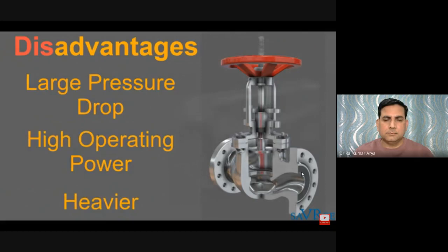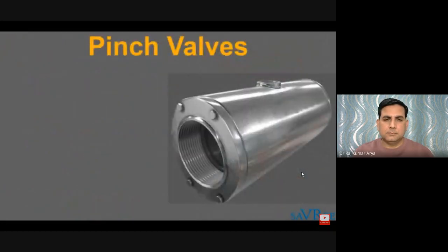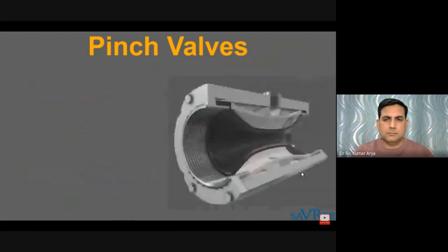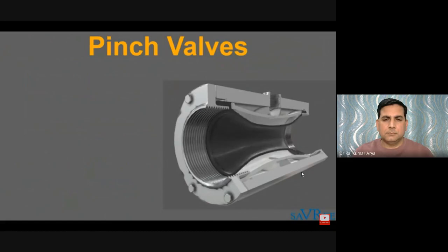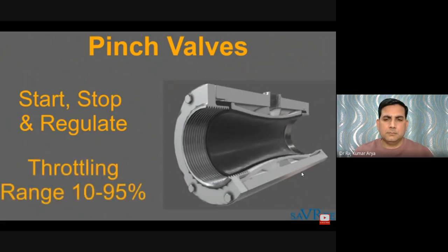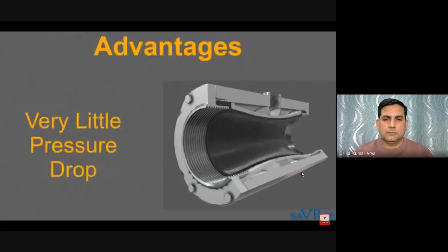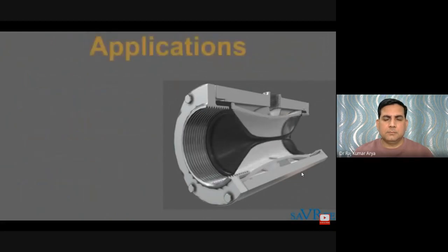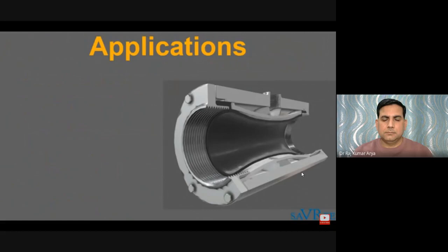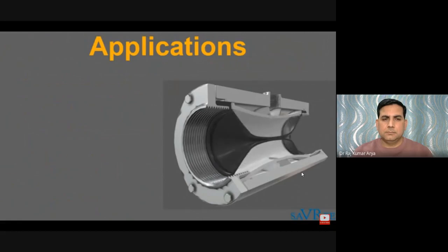Pinch valves are inexpensive and the simplest of any valve design. They consist of a sleeve moulded of rubber or other synthetic material and a pinching mechanism. Pinch valves can start, stop, or regulate flow, with effective throttling typically between 10% and 95% of rated flow capacity. There is almost no pressure drop across a pinch valve. They are ideally suited for handling slurries with large amounts of suspended solids due to their very large seating area, and since operating mechanisms are completely isolated from the flowing medium, they are well suited where corrosion or metal contamination is a concern.